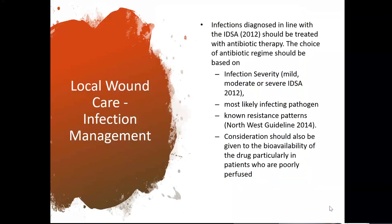We know that infections should be diagnosed on the Infectious Disease Society of America guidance. We should consider the infection severity, the most likely infecting pathogen, and any known resistance patterns. Importantly, consideration should also be given to the bioavailability of the drug, particularly in patients who are poorly perfused. If somebody has poor circulation, the use of oral antibiotics may be reduced, or the efficacy of the oral antibiotic may also be reduced due to that poor perfusion.